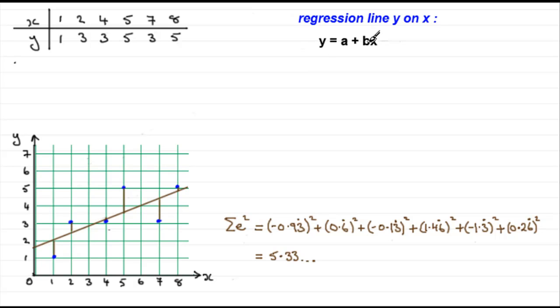And the b is the gradient of our line. How do we work out b? Well b is this value, s_xy over s_xx. Now we discussed these values in an earlier tutorial. s_xy and s_xx were these formulas here, which are often given in formula books. So you might be able to get by without remembering them, but I would certainly encourage you to remember them.